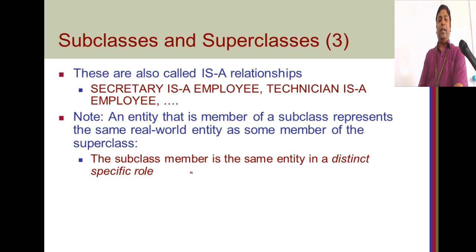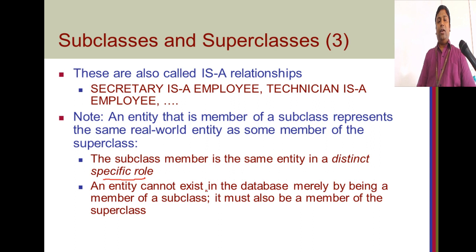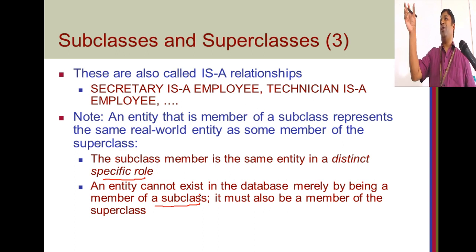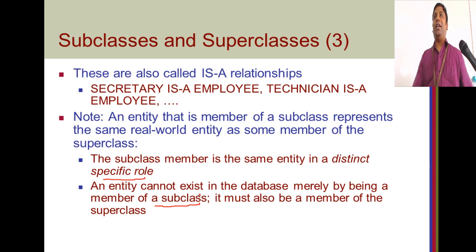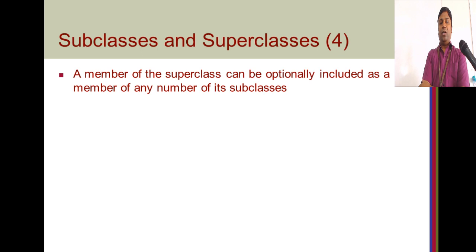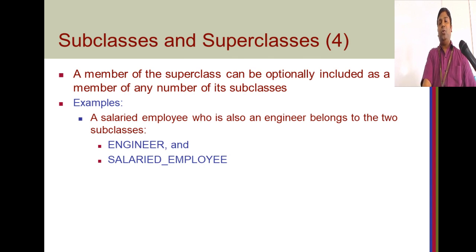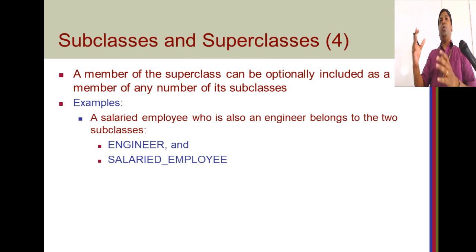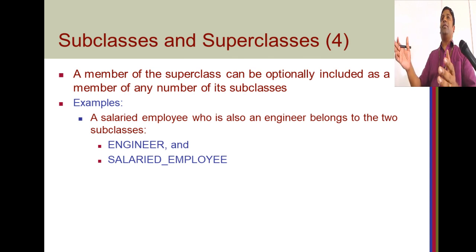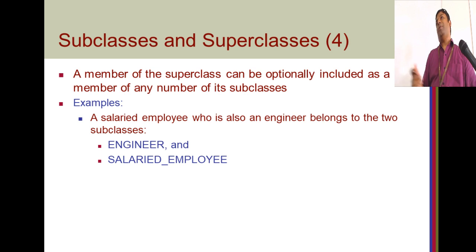The subclass member is the same entity in a distinct specific role. An entity cannot exist in the database merely by being a member of the subclass — I can't take the role of a professor before being an employee first. A member of the superclass can optionally be included as a member of any number of its subclasses. For example, a salaried employee who is also an engineer belongs to two subclasses.